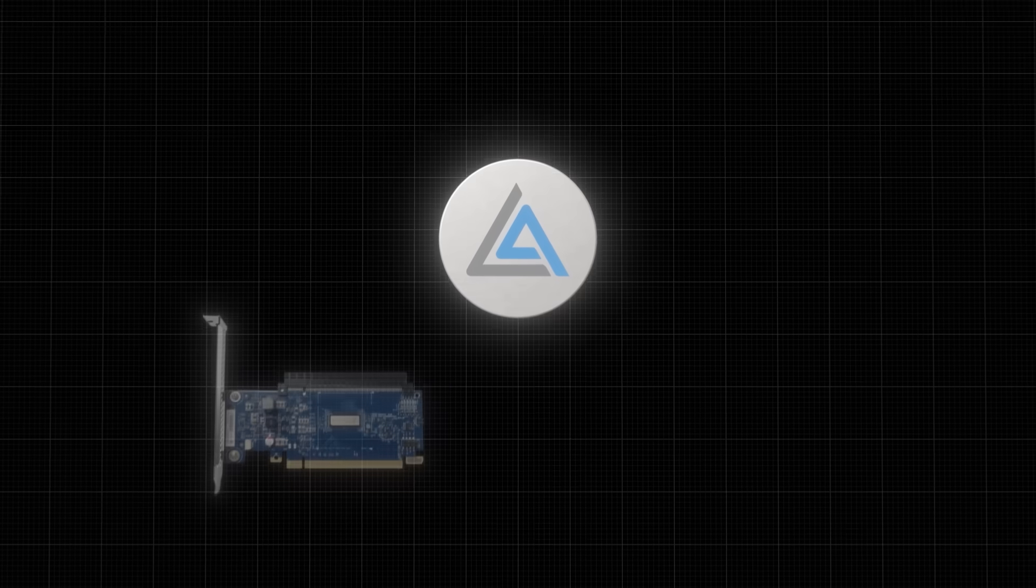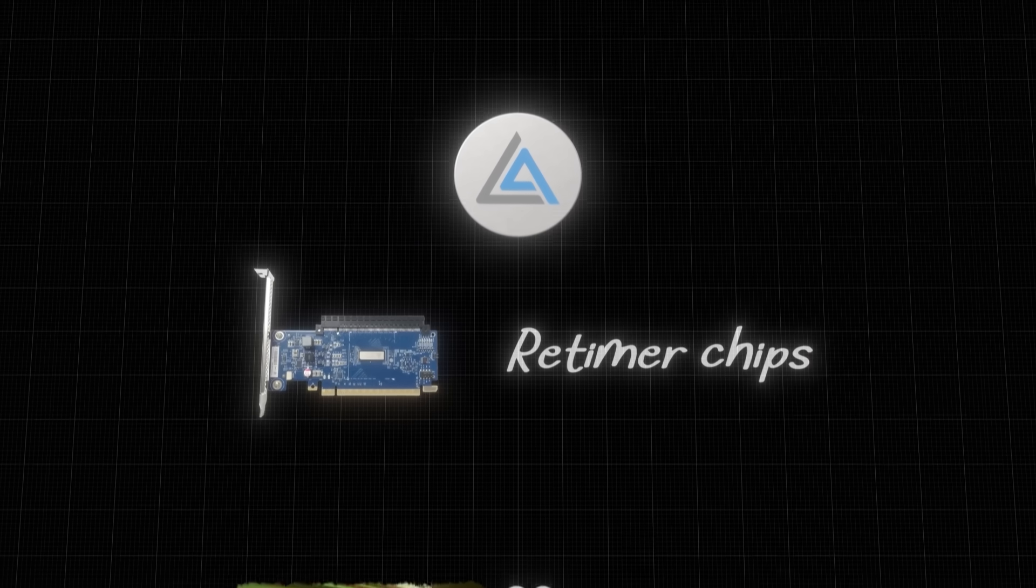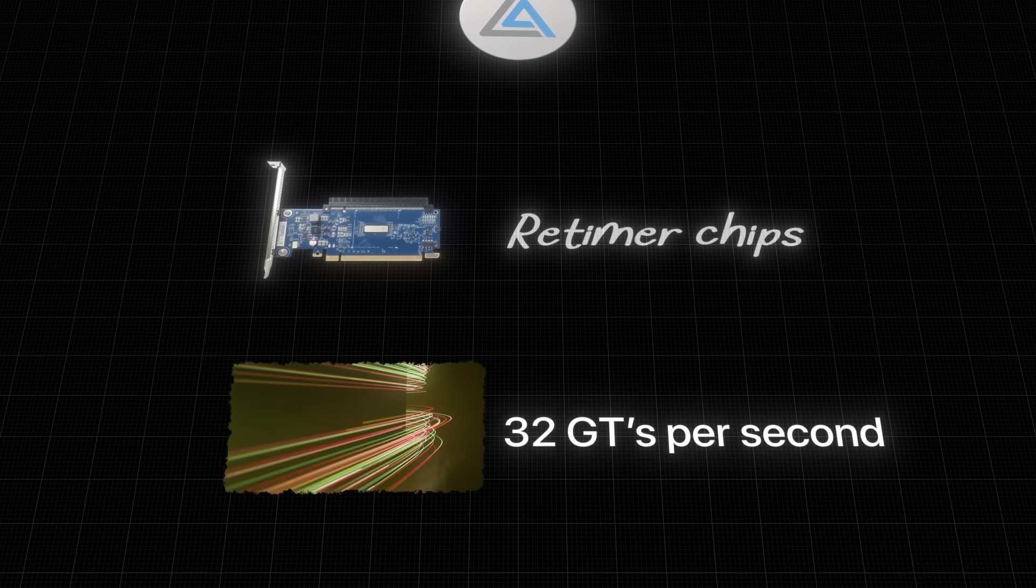Because when Astera's unique retimer chips enabled stable 32 gigatransfers per second connections, where everyone else's solutions failed, Jensen Huang himself took notice. So by 2020, the partnership was sealed. They'd landed the NVIDIA contract.